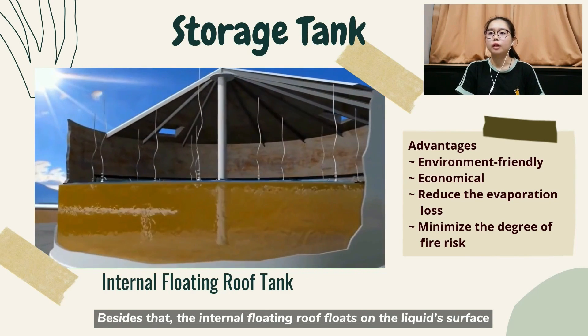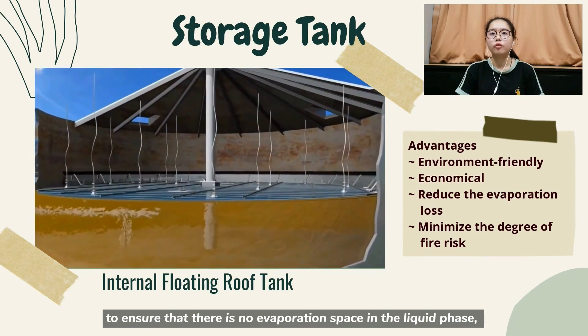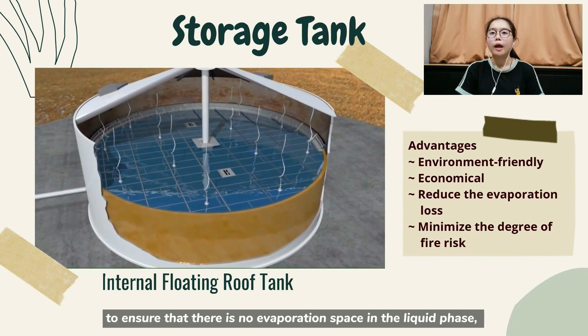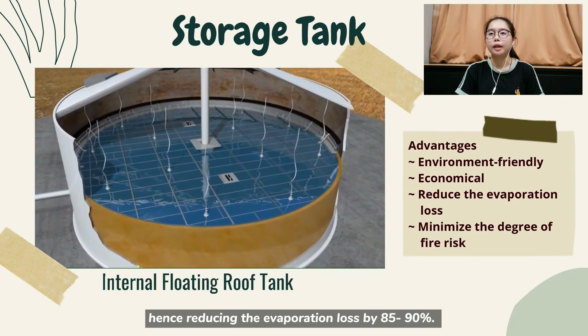Besides that, the internal floating roof floats on the liquid surface to ensure that there is no evaporation space in the liquid phase, hence reducing the evaporation loss by 85 to 90%.